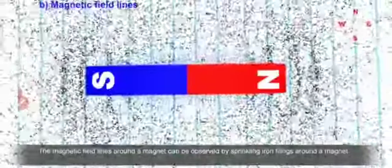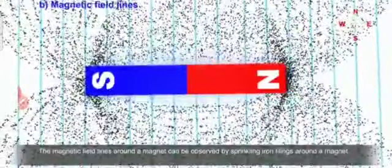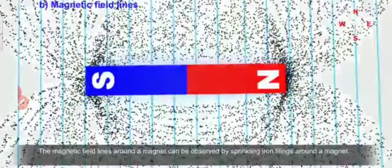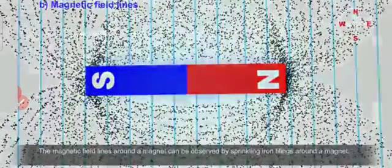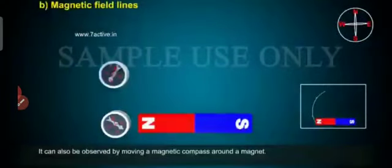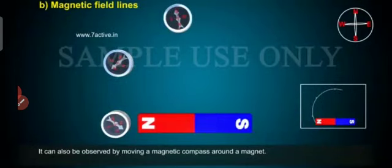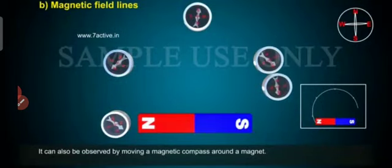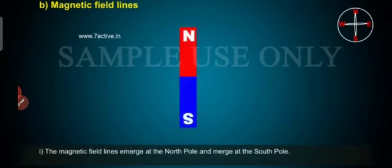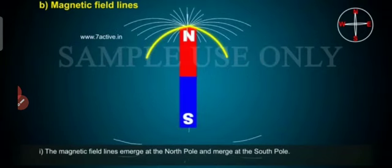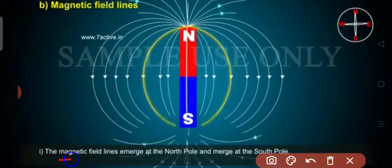The compass needle will be turning and then stop, constantly showing that direction only — it will show one direction and stop. It will not continue to change. When we keep the compass here, it shows the direction, and as we move it a little further it shows the direction again. Magnet attraction always goes from north to south outside, but inside the magnet it goes from south to north.